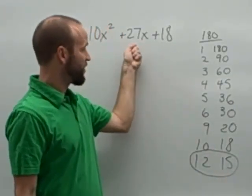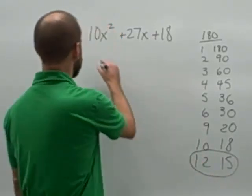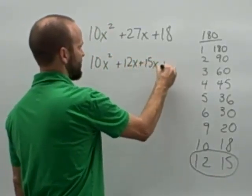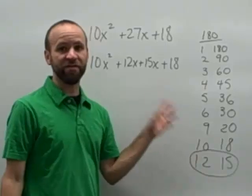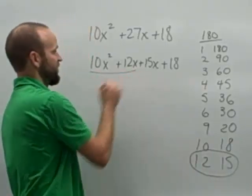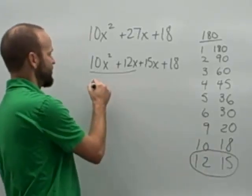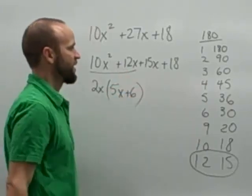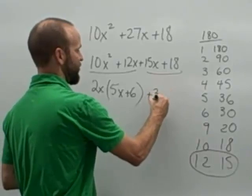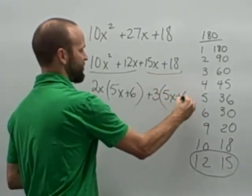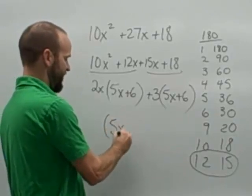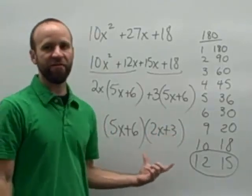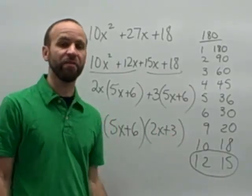So we rewrite 27x as 12x plus 15x. The greatest common factor from the first set of terms is 2x. If I factor out 2x, I'm left with 5x plus 6. The greatest common factor from the second part is 3. If I factor out 3, I'm left with 5x plus 6. So my first factor is 5x plus 6 and the next one is 2x plus 3. These are my factors of 10x squared plus 27x plus 18.